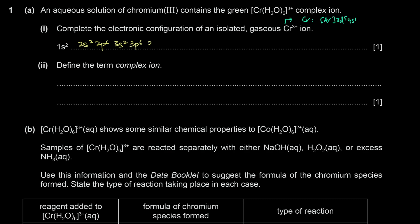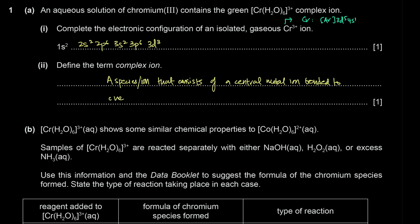Define the term complex ion. A complex ion is a species or an ion that consists of a central metal ion bonded to one or more ligands. These ligands form dative bonds to the central metal ion.